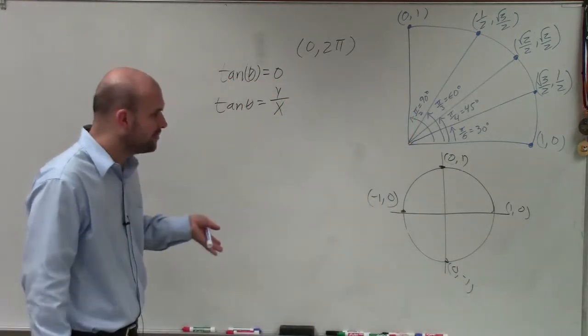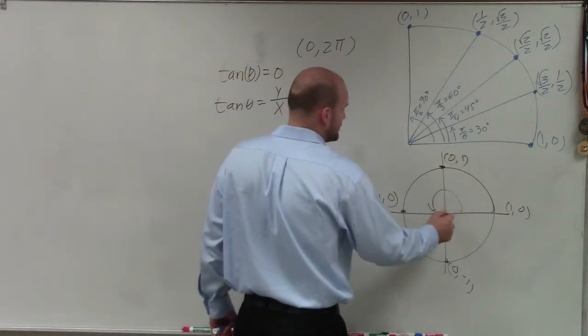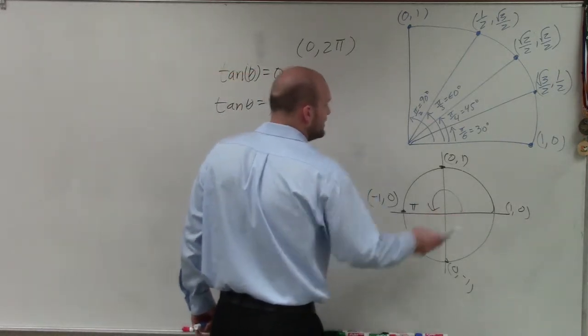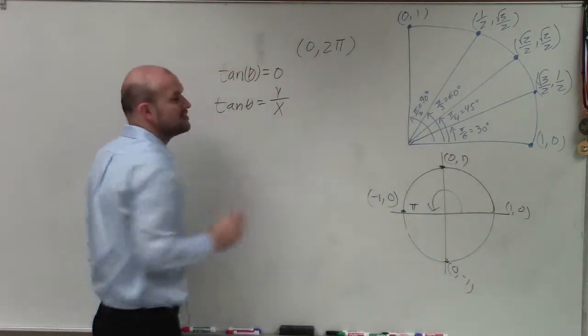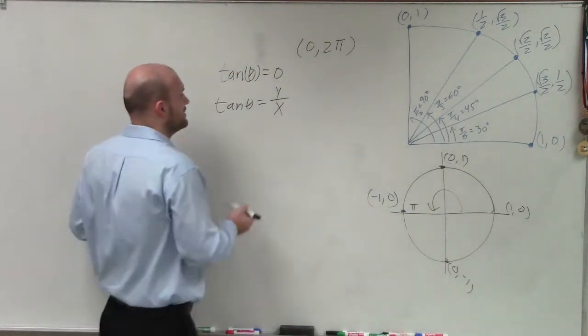So when looking at our two points where our unit circle is going to be equal to 0, you can see that the only angle that it's equal to 0 is at this angle, which is pi. It can't be 0 and 2 pi because those are not a part of our constraints. They're not included.